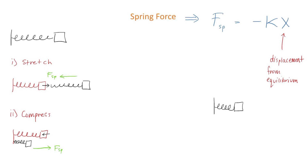Now what does this mean? Well, if I have this spring and I stretch it, its original position was its equilibrium position. And after I stretched it, it went a certain distance x, which represents the displacement from equilibrium.